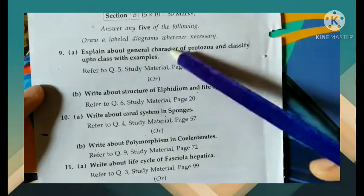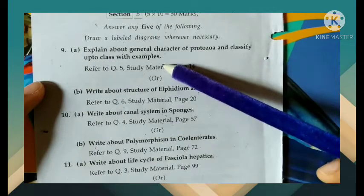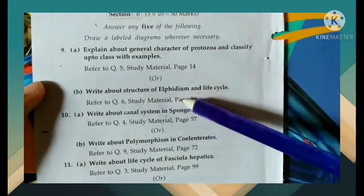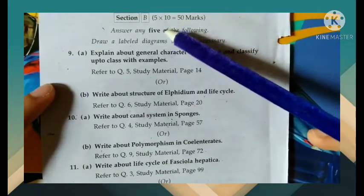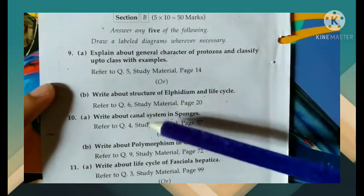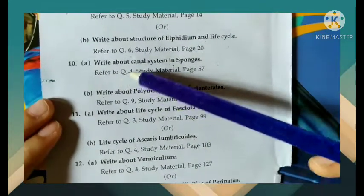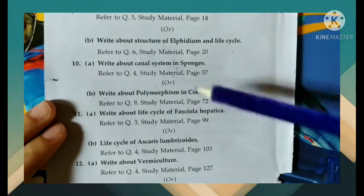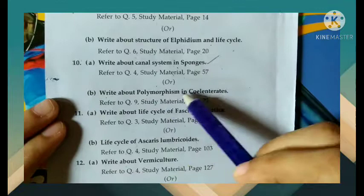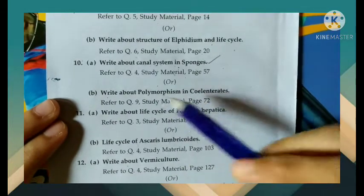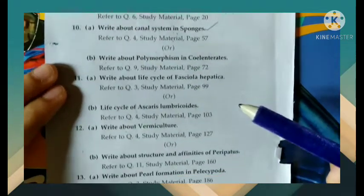Explain about general characters of Protozoa and classify up to class with examples. Write about structure of LPDM and life cycle. Write about canal system in sponges — this is a very important question, it will definitely come. Write about polymorphism in Coelenterata.